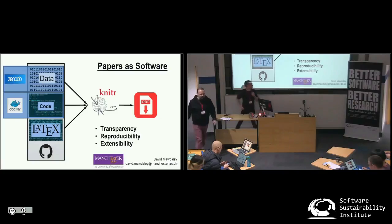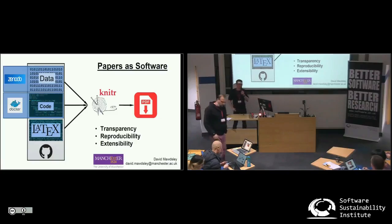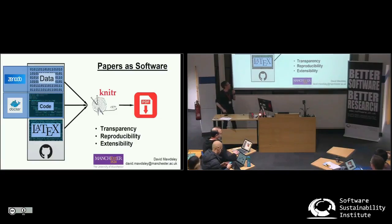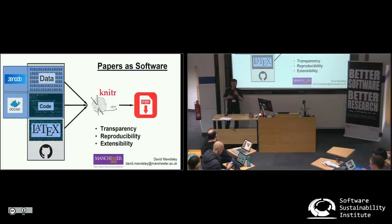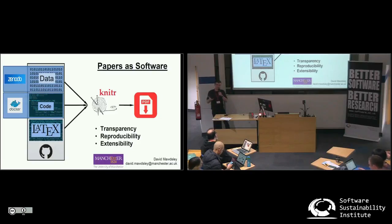Hi, I'm David. I'm a research software engineer at the University of Manchester and today I'm going to talk to you about the process I've been using when trying to make abstracts and papers reproducible. I was struggling with a title for it and I thought, well, I'm treating the paper as a piece of software essentially — so that's how I came up with that title.